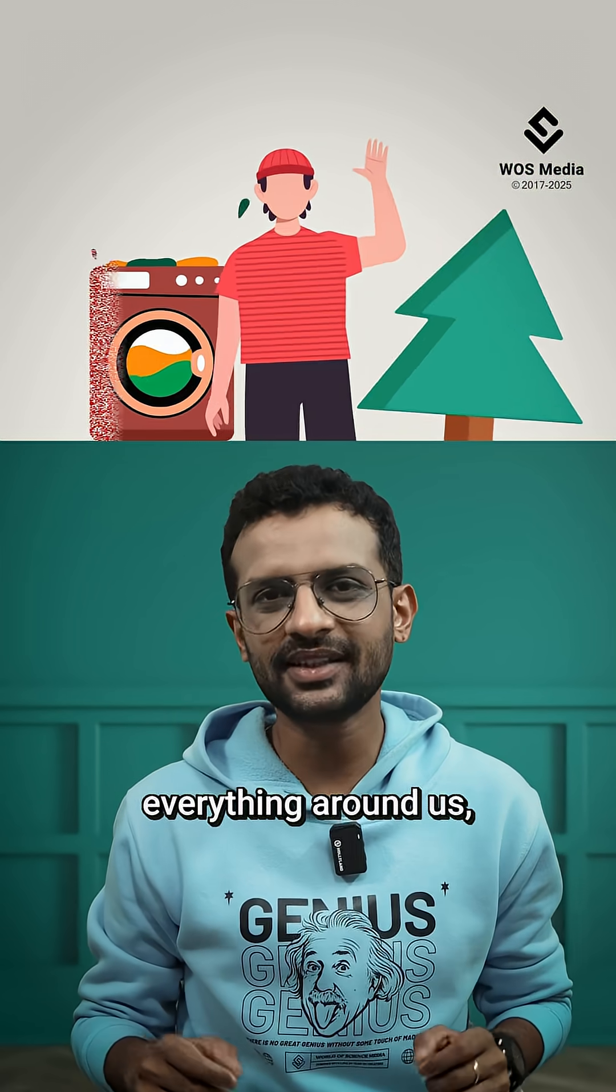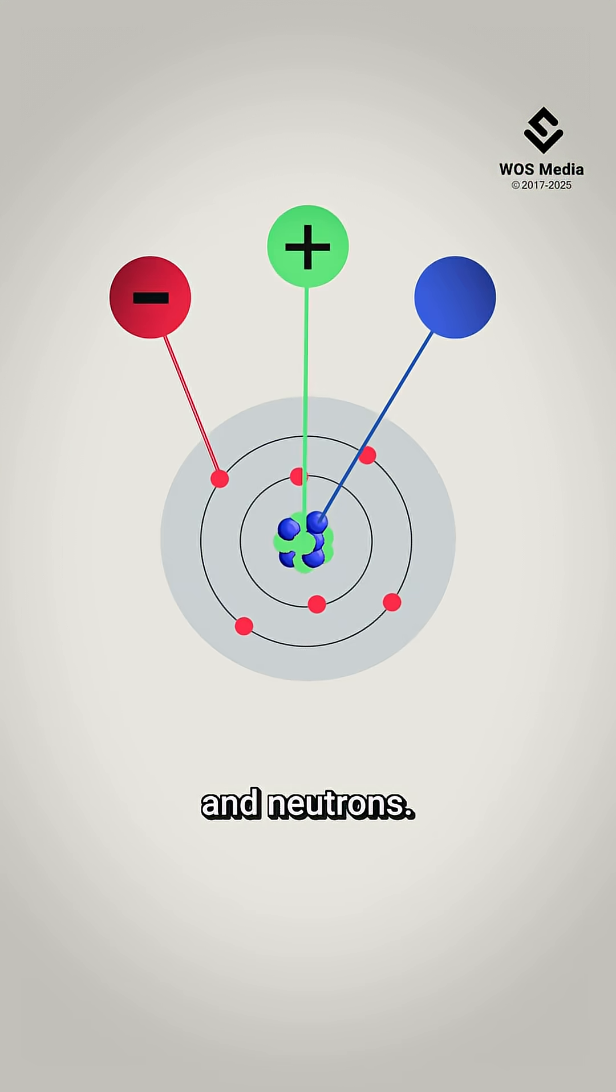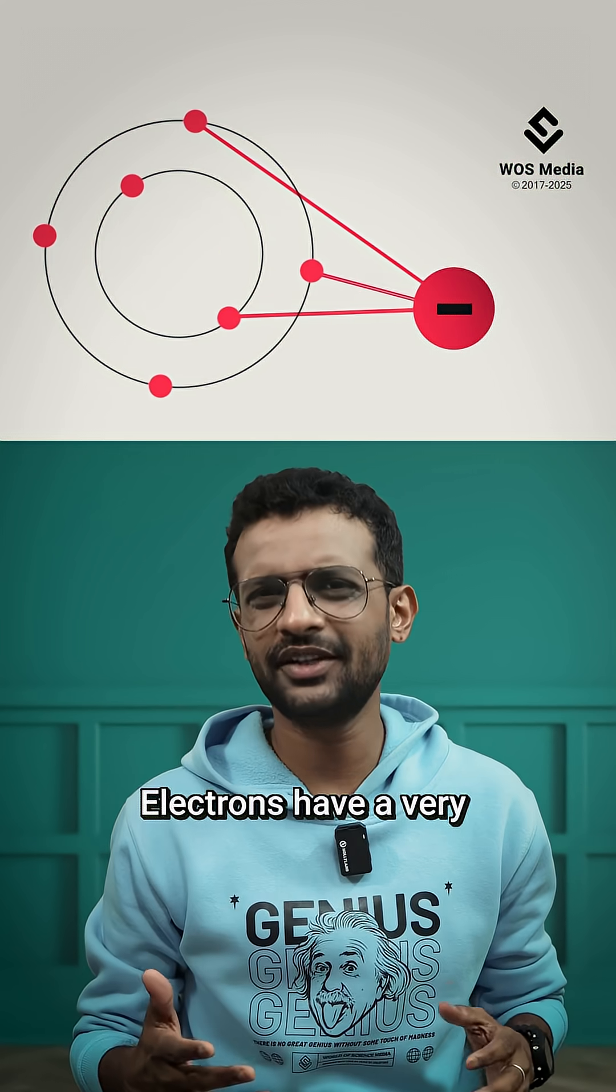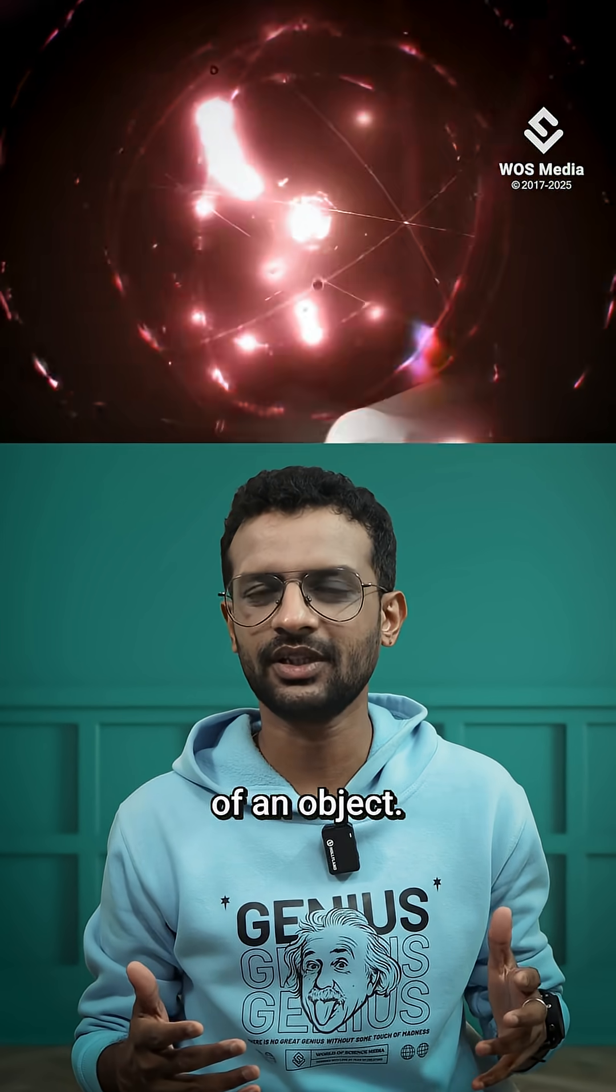We and everything around us are made up of atoms, which are made up of electrons, protons and neutrons. Electrons have a very small mass, so they hardly make any contribution to the overall mass of an object.